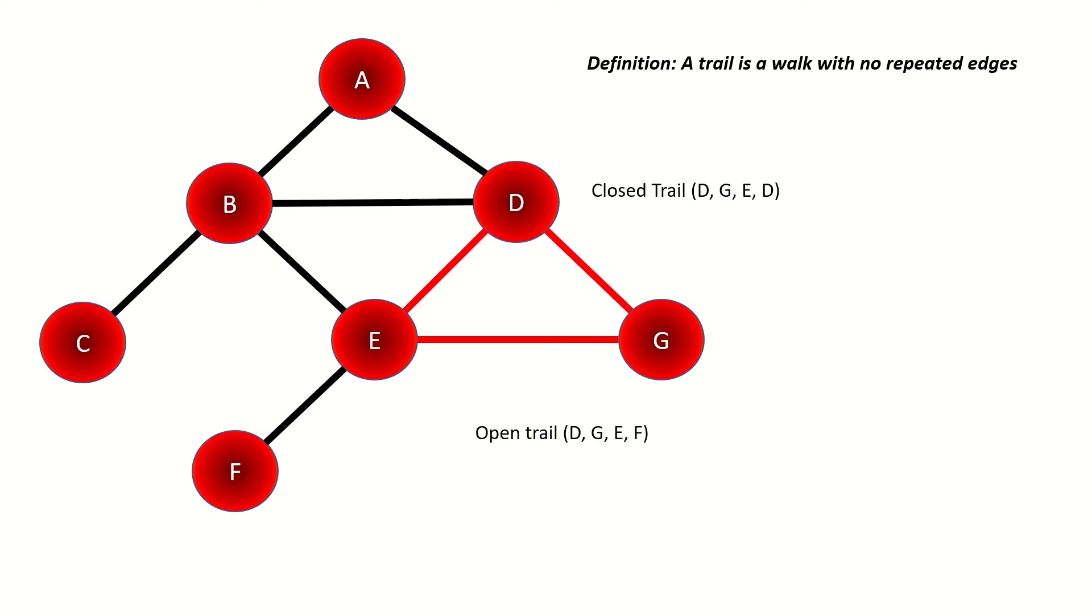In a simple graph, that is a graph in which there are not multiple edges between a given pair of vertices, a trail can be uniquely identified by an ordered list of vertices, as I've been showing you along our previous two trail examples. The length of a trail is the number of edges traveled in that trail. The length of the two trails I've shown you, DGED and DGEF, are therefore three.